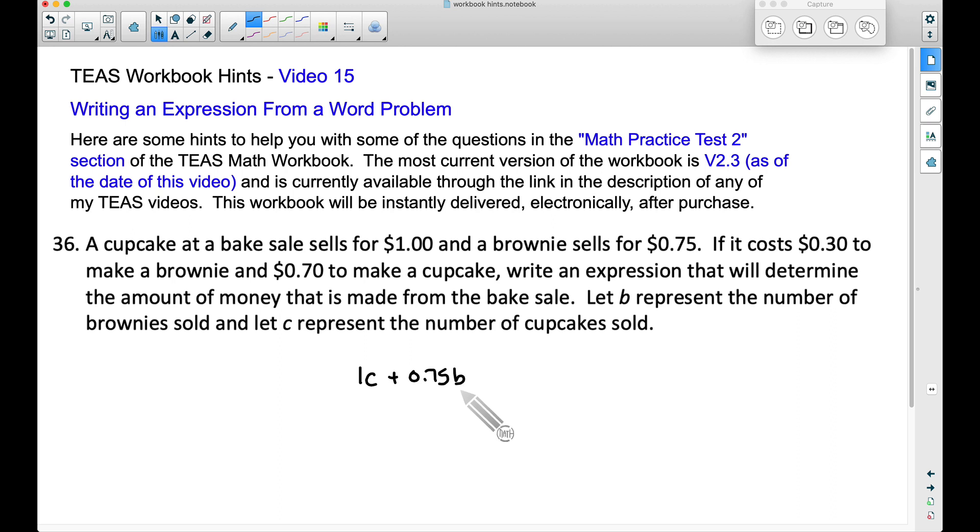But here's the deal. We don't want to stop there. Because yeah, they're going to be bringing in $1 for every cupcake and 75 cents for every brownie, but they had to spend money to make the cupcakes and brownies. That's where this second sentence comes into play. It costs 30 cents to make a brownie and 70 cents to make a cupcake.